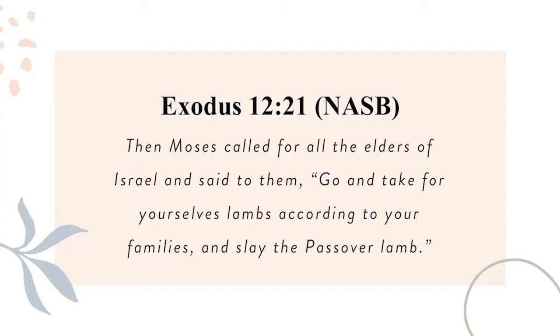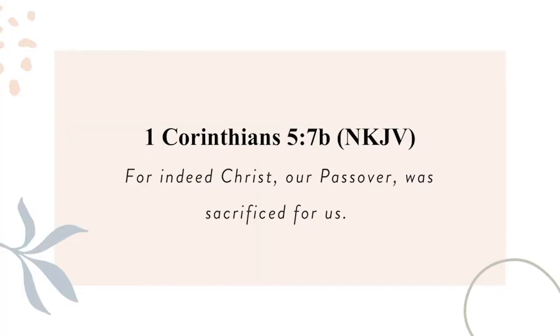For example, let's look at animal sacrifices. We see an image or type in Exodus 12:21. Listen for it while I read the verse: 'Then Moses called for all the elders of Israel and said to them, Go and take for yourselves lambs according to your families and slay the Passover lamb.' Do you recognize the type? It's the Passover lamb. We find the type fulfilled in 1 Corinthians 5:7, where Paul writes, 'For indeed, Christ, our Passover, was sacrificed for us.'